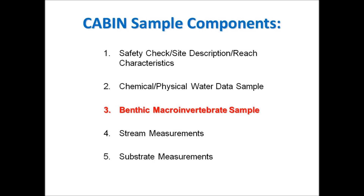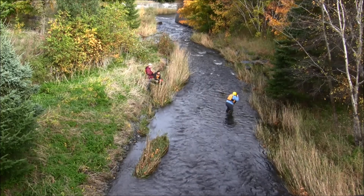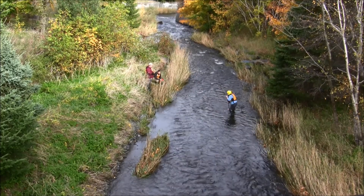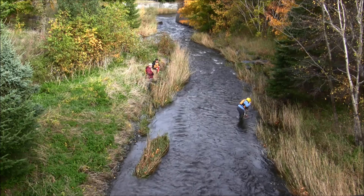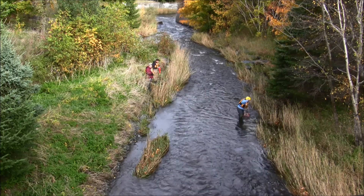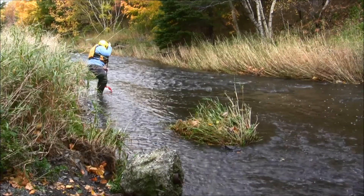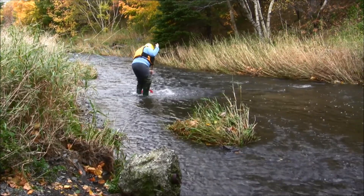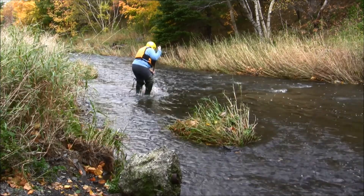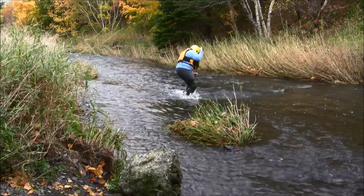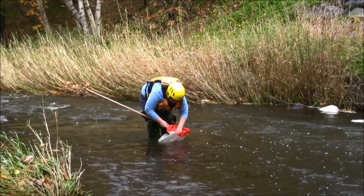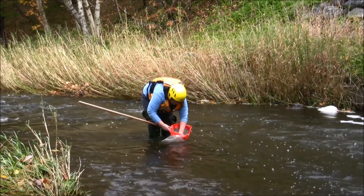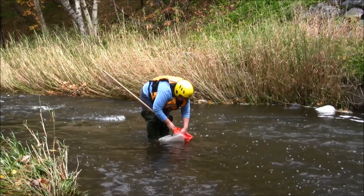Next, let's look at collecting the benthic macroinvertebrate sample. One team member accesses the timer, counting down three minutes for the kick net sampler, and watching the kicker for safety issues, warning them of any obstacles in their path in the river. The kicker walks through the riffle area of the river in a zigzag pattern against the flow, from downstream to upstream, keeping the net downstream of their feet as they twist and kick the substrate. This releases invertebrates from the riverbed, allowing the flow to carry them into the net. At the end of the three-minute kick, the flow of the water is used to direct the bugs and debris toward the bottom of the kick net.